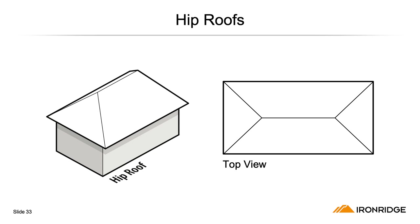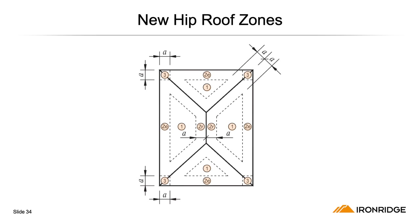A hip roof, or hipped roof, is a type of roof where all sides slope downwards to the walls, usually with a fairly gentle slope. This is a diagram of the new roof zones on a hip roof. Zones 1 and 3 remain unchanged from 710 to 716, but zone 2 has been further segmented into 2E and 2R.